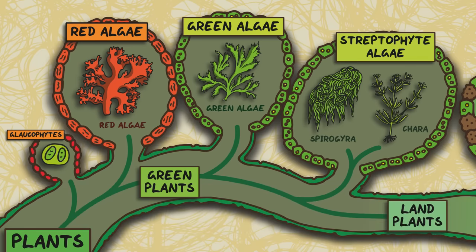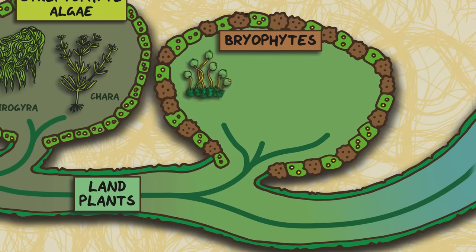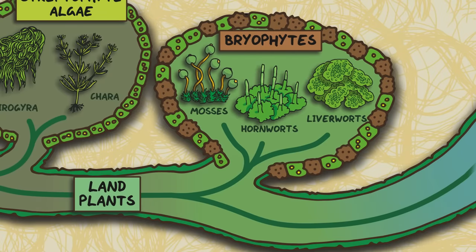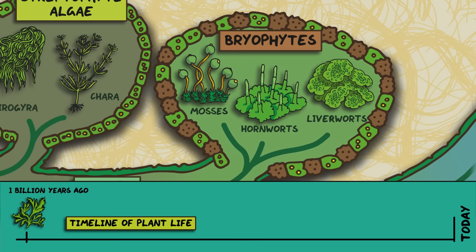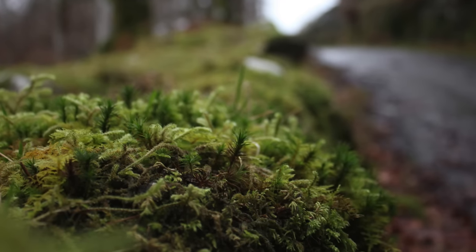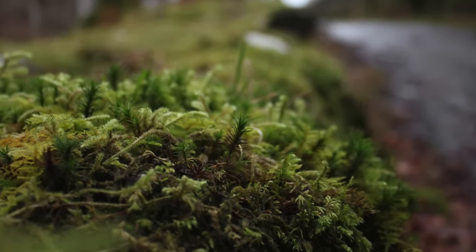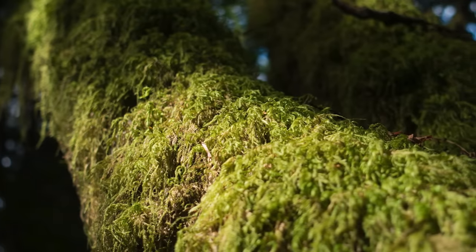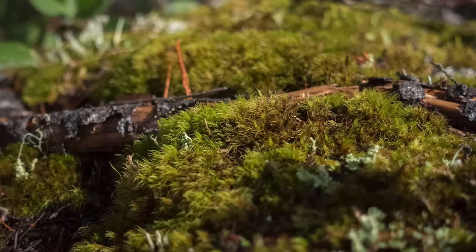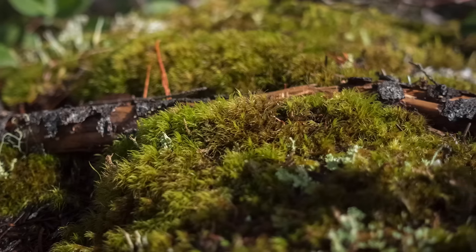Let's move on to the land plants. Bryophytes contain mosses, hornworts and liverworts, and are a crucial part of our understanding of the evolution of plants, as they're considered to be very similar to the earliest land-dwelling organisms on earth which started to live on land from around 470 million years ago — around 50 million years before animals. They lack many features of more modern plants like flowers or vascular tissues, which transport water and nutrients like sugars around the plant, but they do have root-like structures called rhizoids.